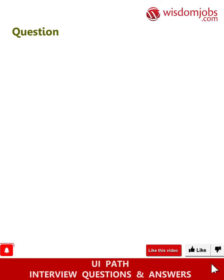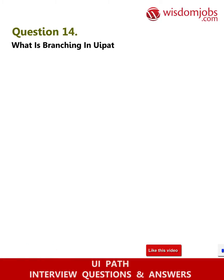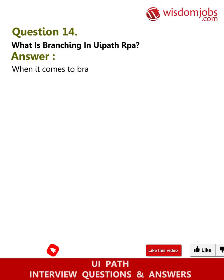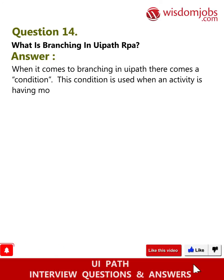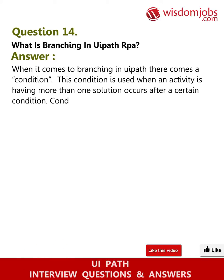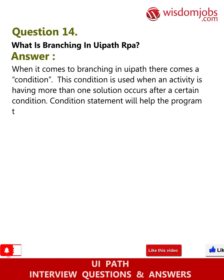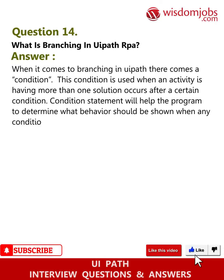Question fourteen: What is branching in UiPath? Answer: When it comes to branching in UiPath, a condition is used when an activity has more than one possible outcome after a certain condition occurs. The condition statement helps the program determine what behavior should be shown when a condition is selected.